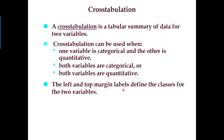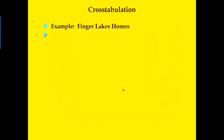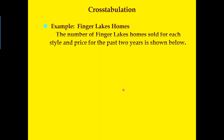Generally speaking, we create a table where the left and top margin labels define the classes for the two variables. Now I want to show you an example of how a cross tabulation is supposed to look like. This is the example about Finger Lake homes — the number of homes sold for each style and price range over the past two years is shown below. What I'm going to show you is the table that we call cross tabulation.